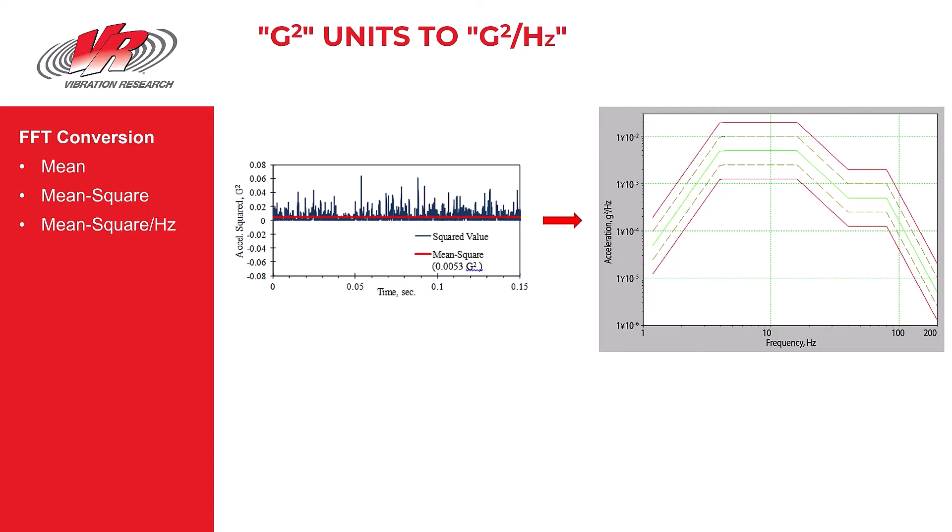Density - it's a certain amount of G squareds per Hertz. In the vibration industry since that measured value is generally acceleration, this plot is also labeled as an ASD plot, an acceleration spectral density plot.